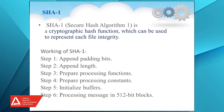Step 3 is preparing of processing functions. As SHA-1 undergoes 80 rounds, it requires 80 processing functions in binary format. Step 4 is preparing processing constants — it also requires 80 processing constant words in hexadecimal format. Step 5 is initializing of buffers — 5 buffers, each of 32-bits, totaling 160-bits. The final step is processing the message in 512-bit blocks, where steps 1 and 2 are looped together until 512-bit blocks are formed.